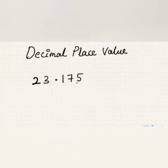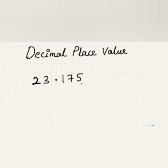We all know that a decimal number consists of two parts: a whole number part and a fractional part, separated by a decimal point. Each digit in this decimal number has its own place value.